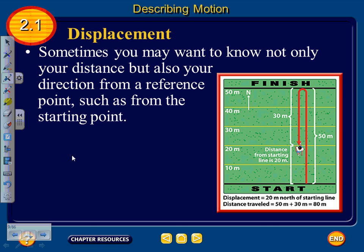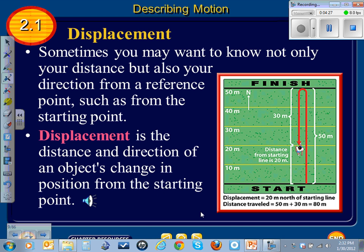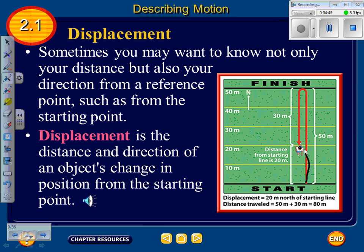Sometimes you want to know not only your distance but also your direction from a reference point such as the starting point. Displacement is the distance and direction of an object's change in position from the starting point. In this case, the displacement of the runner is 20 meters north of the starting line. The total distance traveled is 50 plus 30 meters, but the displacement from the starting line is only 20 meters. Distance and displacement are not the same variable.